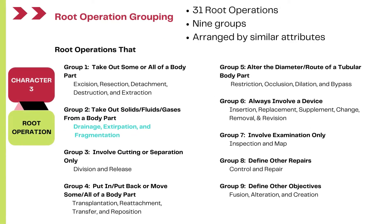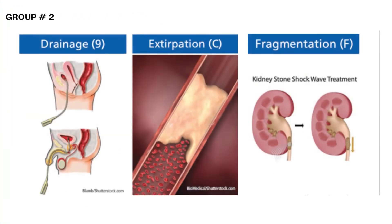There are 31 root operations in the medical and surgical section, and these root operations are divided into nine groups, all based on similar attributes or similar kinds of surgical procedures. Today we are looking at the second group, which talks about root operations that take out solids, fluids, or gases from a body part. There are three root operations in this second group: Drainage, Extirpation, and Fragmentation.